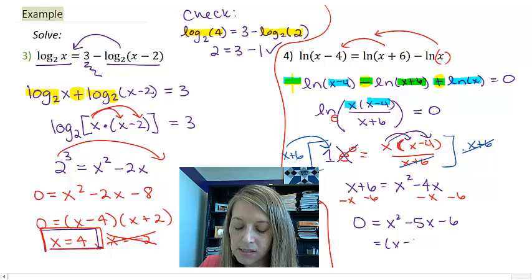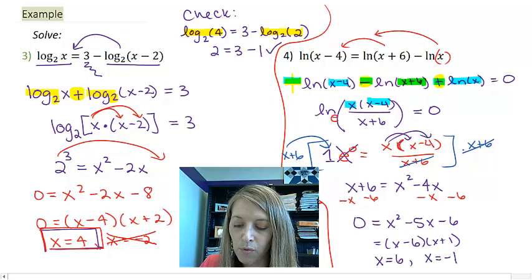This gives me 0 equals x squared minus 5x minus 6. If I factor this, x minus 6, x plus 1 gives me the solution of x equals 6 and x equals negative 1.